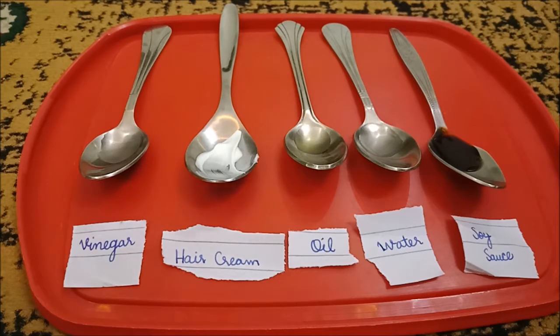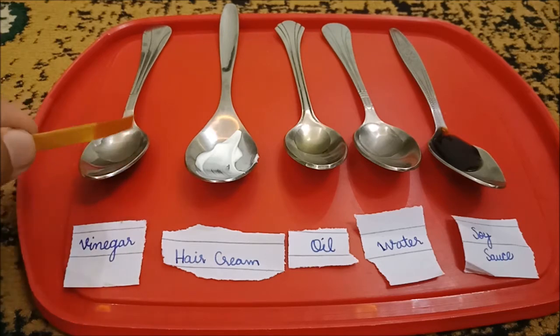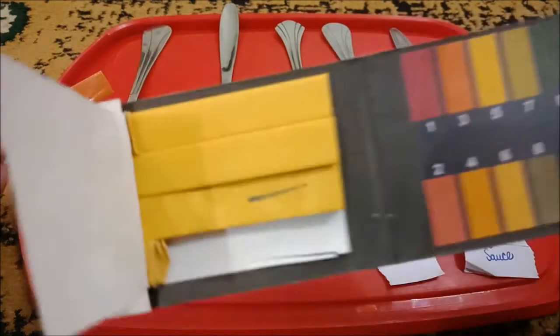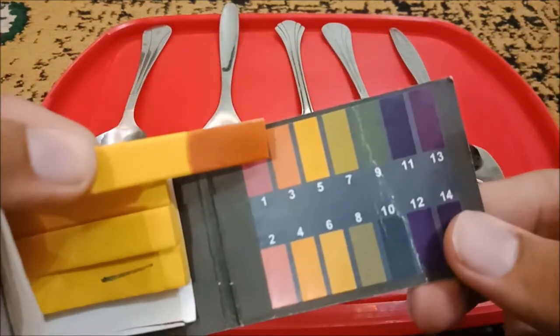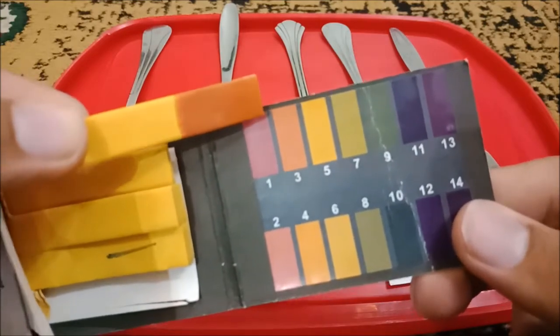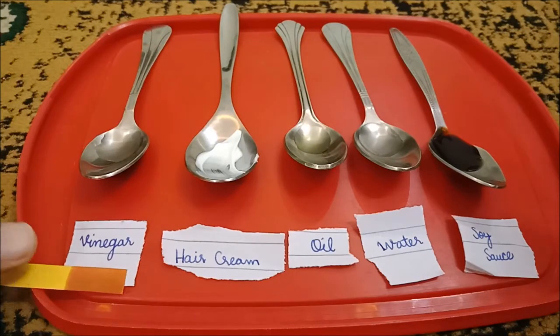And it turned into an orange color. Now if we relate it to the chart given to us, the color is near 3, so it means it's a weak acid. The strongest acid is 1. So we'll put this here with the vinegar, the orange one.